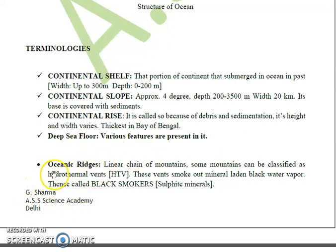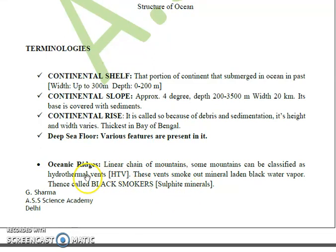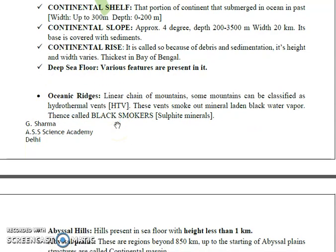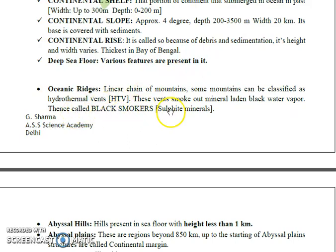Oceanic ridges are linear chains of mountains submerged under oceanic water. Some mountains can be classified as hydrothermal vents (HTV). These vents smoke out mineral-laden black water, which is why they are also called black smokers. The minerals come from rocks — when hot leaching water passes through the rocks, black-colored smoke is observed. These minerals are majorly sulfide minerals. The vents are also called smoking pipes, and the temperature in these vents may go up to 180 degrees Celsius.